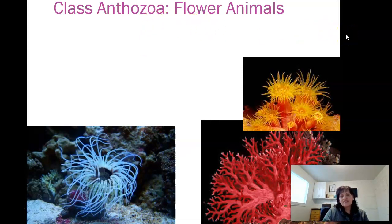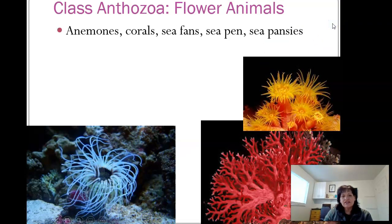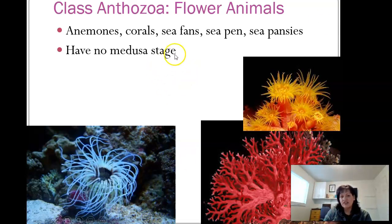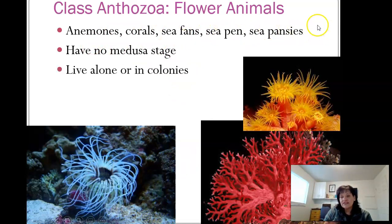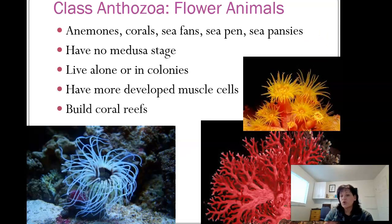The next one is class Anthozoa — these are considered flowering animals. They definitely look more like flowers. These are the anemones, coral, sea fans, sea pens, and sea pansies. They have no Medusa stage; they always stay in the polyp stage and never turn into that upside-down jellyfish-type stage. They may live alone or in colonies, and they have more developed muscle cells and build coral reefs.